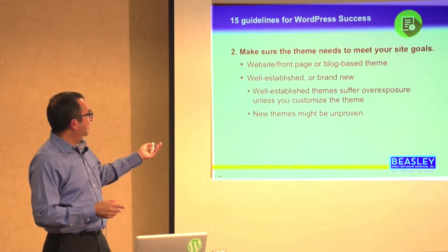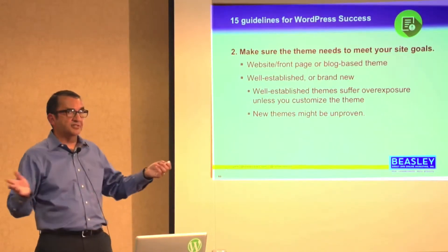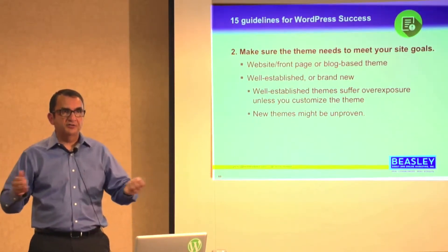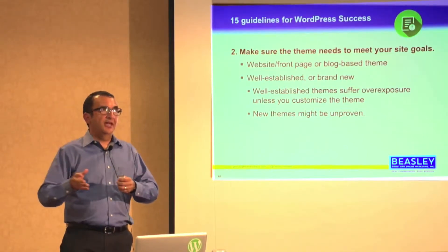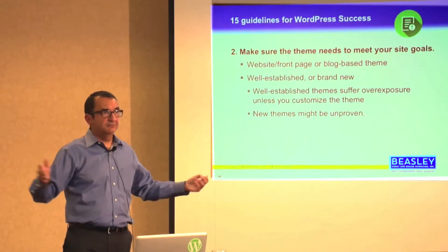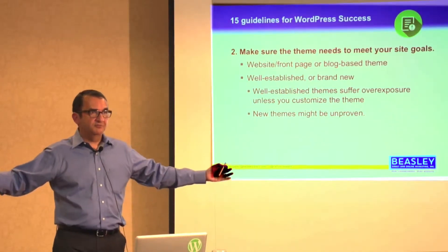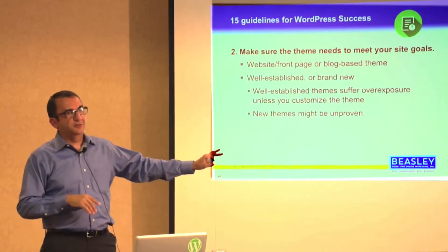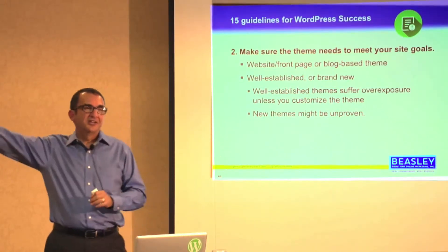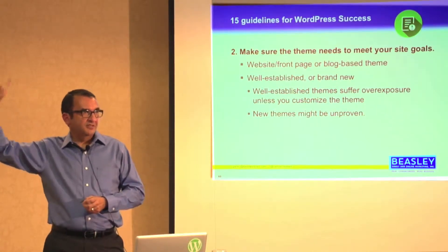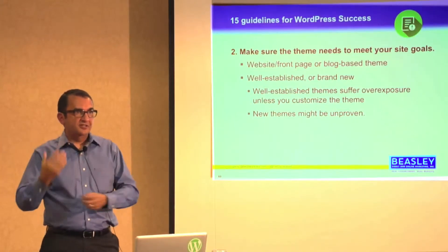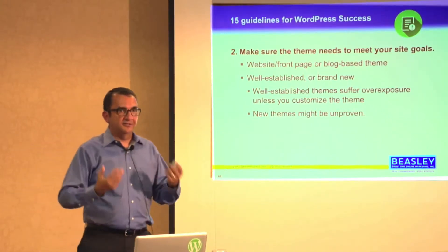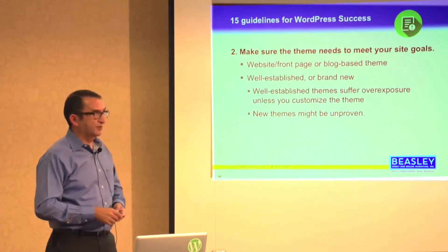One side of the coin is that well-established themes suffer overexposure unless you customize them. For somebody who's regionally based and focused, does it really matter? For example, the real estate WordPress niche has incredible repetition, but real estate people by and large work within a radius of 500 miles from their home base. So somebody in Southern California with their big picture on the front page is not going to care if the same theme is being used by someone in Virginia. But for those working with enterprises that go beyond those limits, overexposure is important — it goes along with repetitive visuals or overuse of stock photography.